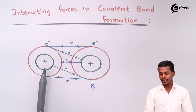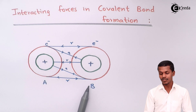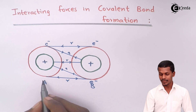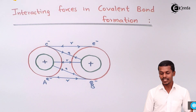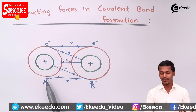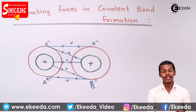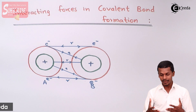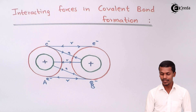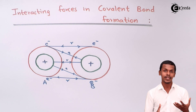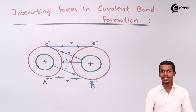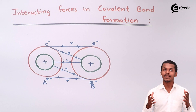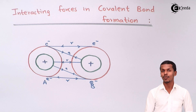Talking about the force of attraction again, the nucleus of A will have an attraction with the electron of B, so there will be a force of attraction. Now, the electron of A and the electron of B will both feel repulsion. The covalent bond will be formed if all the forces of attraction present are greater than the forces of repulsion — in that case, A and B will combine with each other to form a covalent bond.